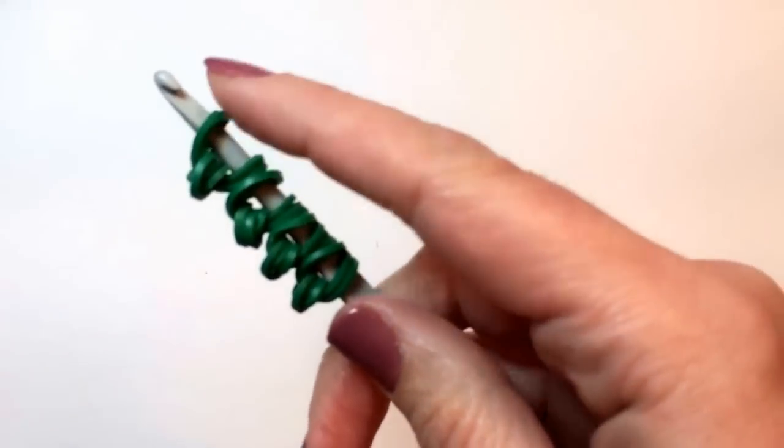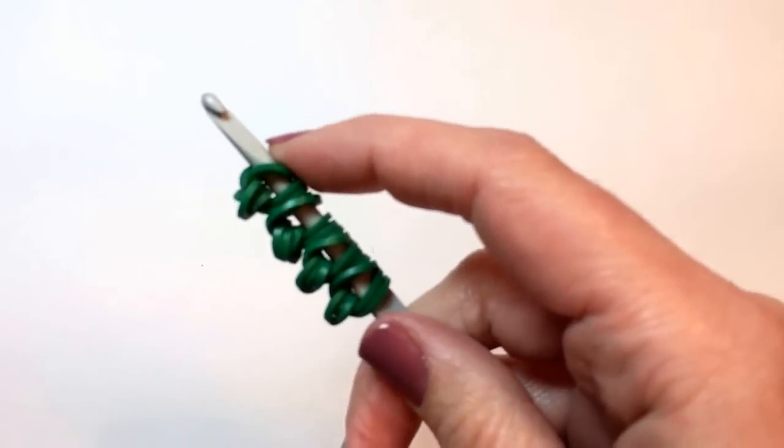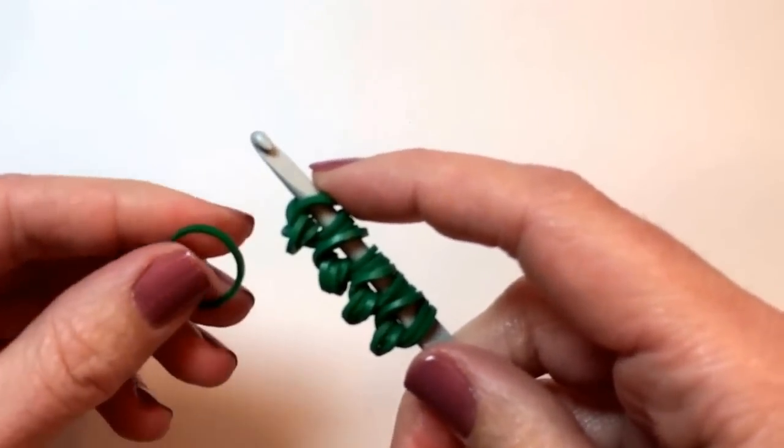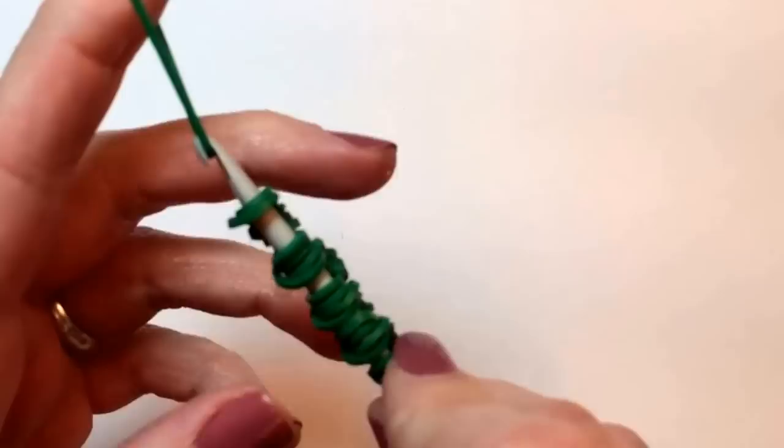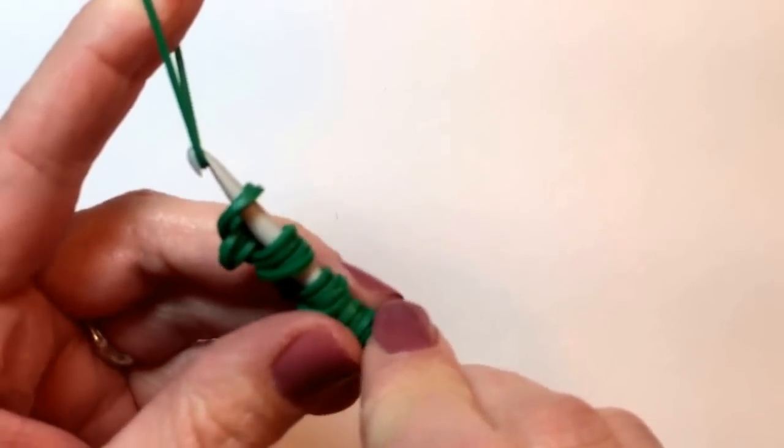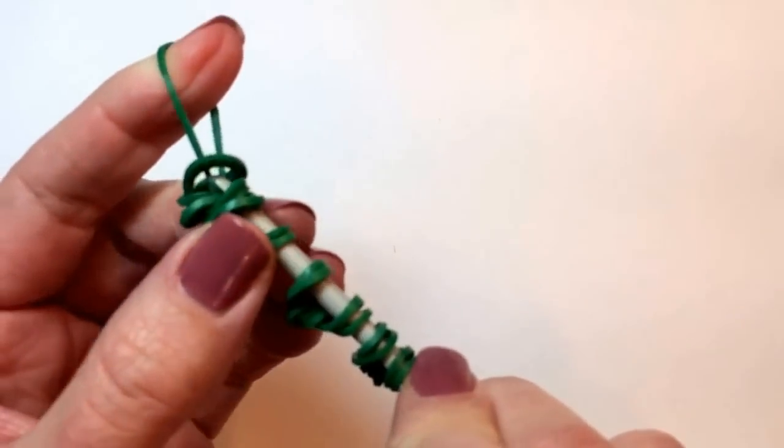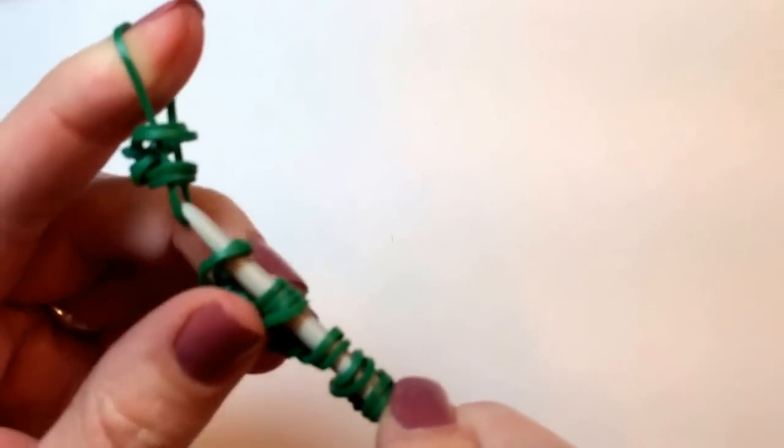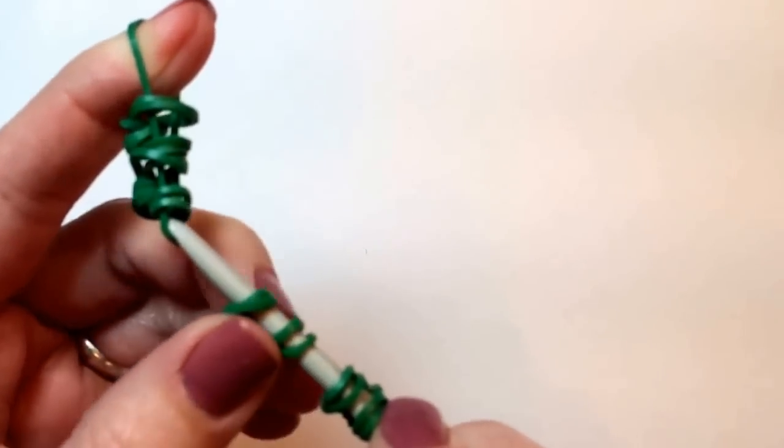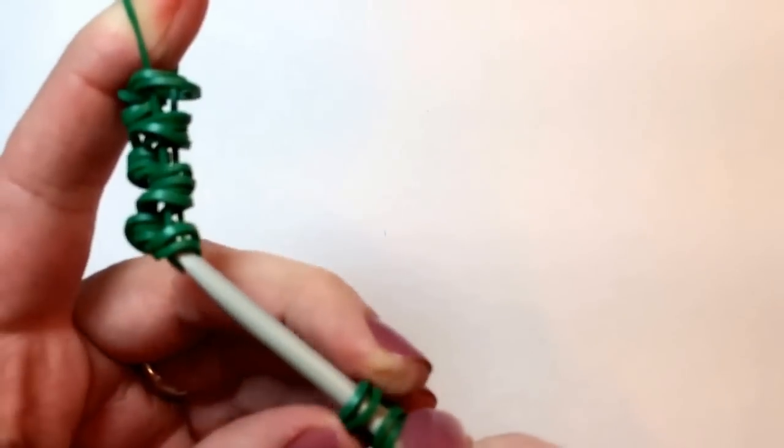So now I have the four sides of my four-leaf clover. I'm now going to take a single rubber band, stretch that out tight, and then pull the four sides along the hook so that they're all on the rubber band.